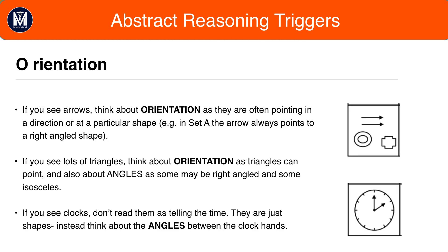Next we have orientation triggers. First of all if you see arrows straight away you should be thinking about orientation as they're the biggest sign pointing towards direction. Arrows could be pointing in a particular direction, for example set A could have three arrows pointing to the right in each box whereas set B has two arrows pointing up.